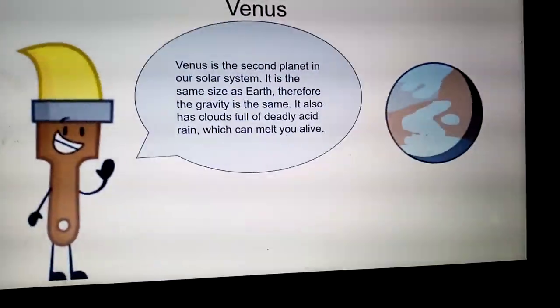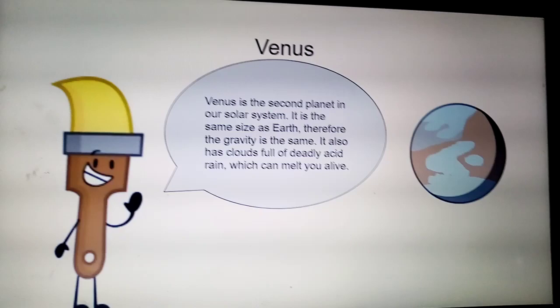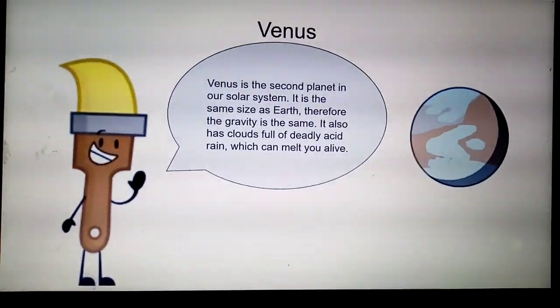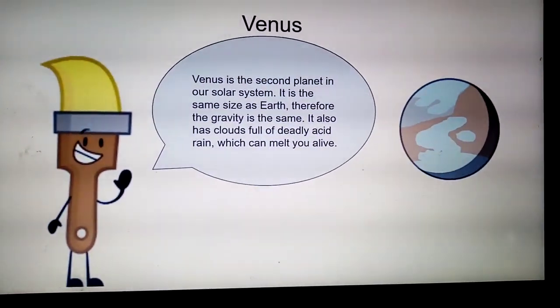Venus is the second planet in our solar system. It is the same size as Earth, therefore the gravity is the same. It also has clouds full of deadly acid rain which can melt you alive.